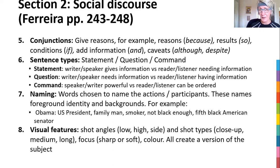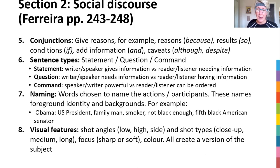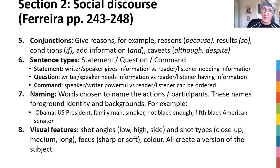And the last one is the visual aspect, which is your visual literacy part. Look at the shot angles — is it a high, low, side, or wide type of shot? What is it: a close-up, a medium, a long shot? Is the focus sharp or soft? What colors have been used? What are they wearing? All the visual parts of it. This creates a version of the subject that you want the reader to have. So there are eight of them all from Ferreira which you can use for social discourse.